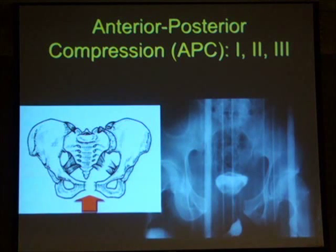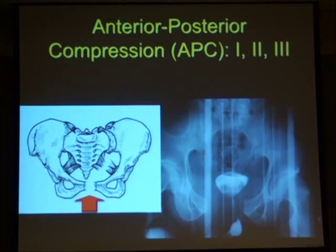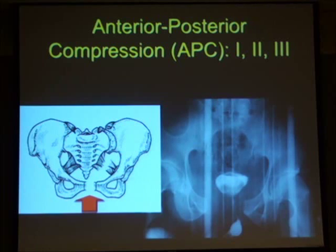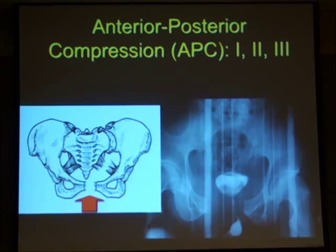The anterior-posterior compression (APC) type can be split into 1, 2, and 3. APC1 is minimal diastasis less than 2.5 centimeters. APC2 is more than 2.5 centimeters diastasis. APC3 is where the whole front, middle, and back is gone — a completely rotationally unstable pelvis that may or may not be vertically unstable. It can sometimes be difficult to distinguish between an APC3 and a vertical shear injury.